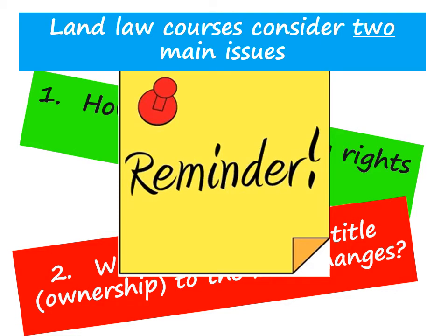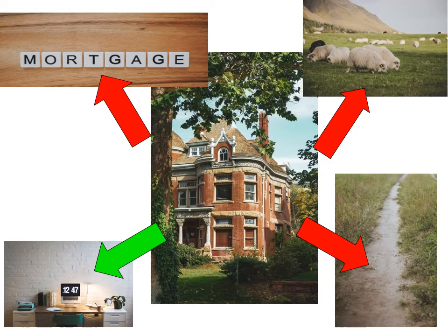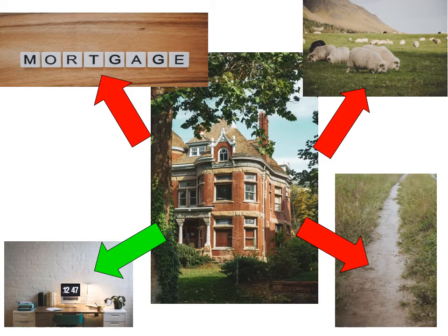Just to remind you, most law courses consider two main issues: first, how proprietary rights are created, which is what we've just looked at, and secondly, what happens when title to the land changes. Going back to Sarah and Country House, Lee, Mrs. East, Farmer Giles and the bank all have rights in the land which are binding on Sarah. But what we're interested in is whether they are capable of affecting third parties — principally a purchaser of Country House — and whether they are also affected by those rights. We refer to that as whether those rights are binding on a purchaser. The central issue is whether a third party purchaser who buys land from the person who created the right is also bound by those rights and future owners of the land as well.